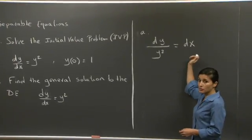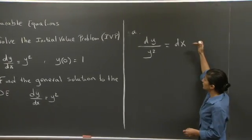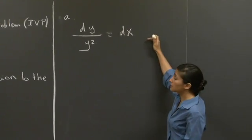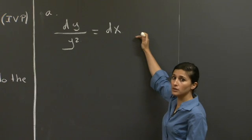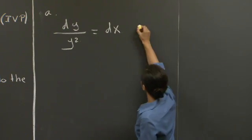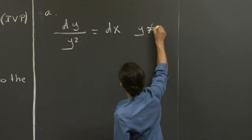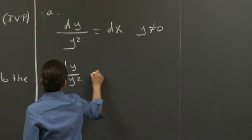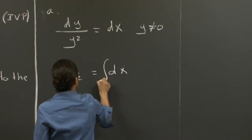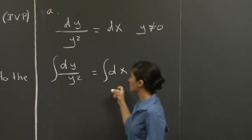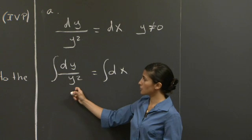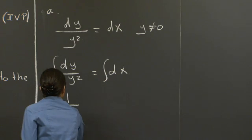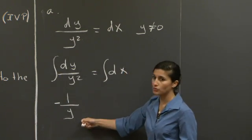And then integrate from this point. For this step, notice that I divided by y squared, which means that we need to impose the condition y not equal to 0 from now on. From this step, we just use indefinite integrals to integrate both sides of the equation. The left-hand side is the integral of dy over y squared, which gives us minus 1 over y.